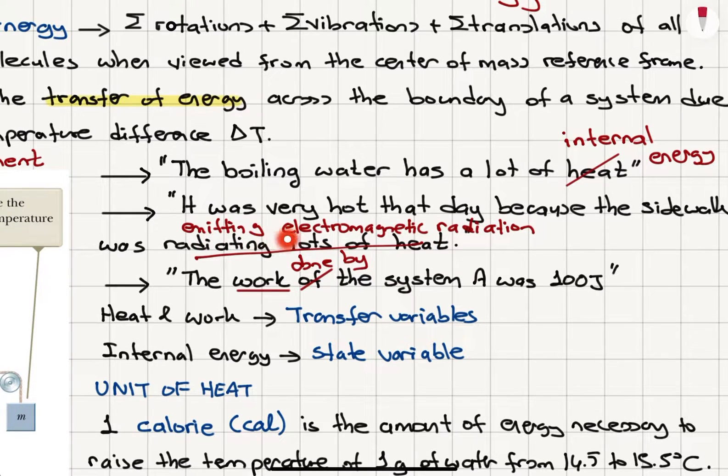It was very hot that day because the sidewalk was radiating lots of heat. No, the sidewalk was emitting electromagnetic radiation. So we have energy transferred in the form of electromagnetic radiation. So we don't say it's radiating lots of heat.